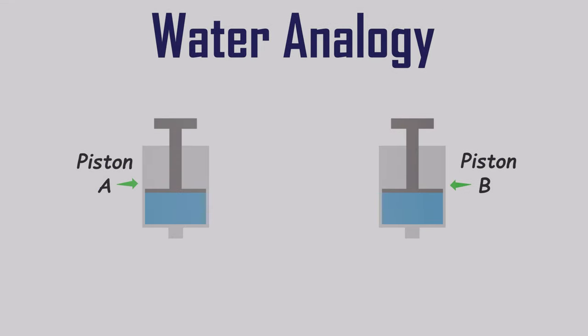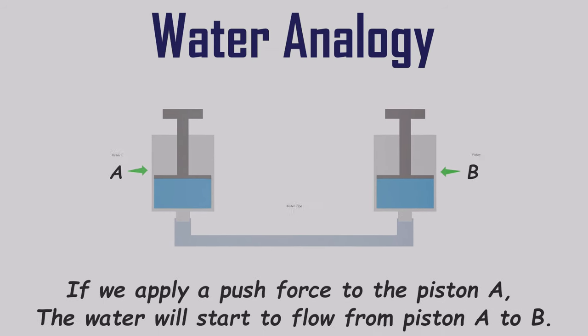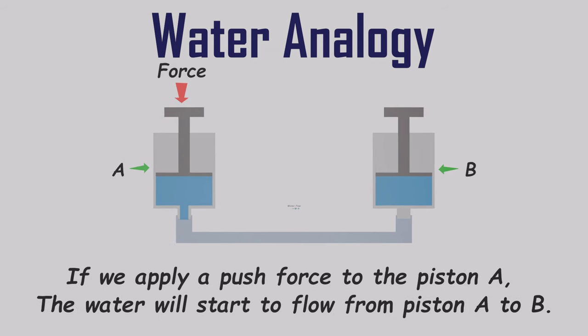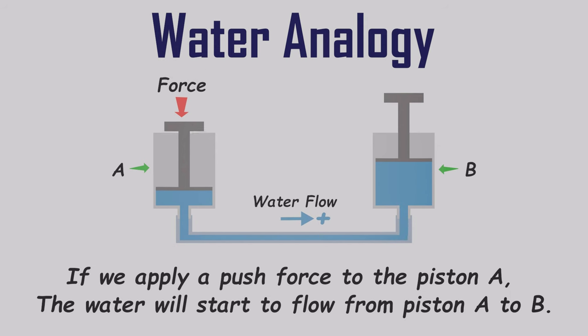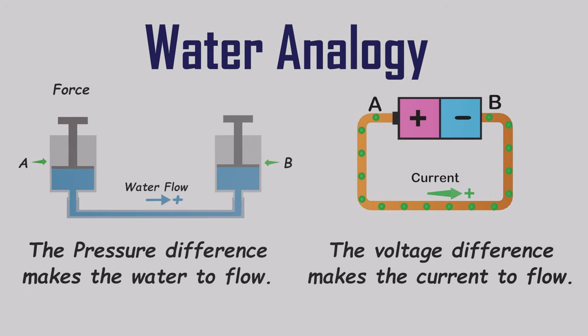Using the water analogy, we can understand the behavior of capacitors more easily. Imagine two pistons, each containing water, connected by a pipe. When we apply a constant force to piston A, water starts flowing to piston B due to increased water pressure. This phenomenon is akin to the flow of electric current in a circuit. When a battery is connected, electrons move from the negative terminal to the positive terminal. In the context of electricity, we consider current to move from the positive terminal (high potential) to the negative terminal (low potential).